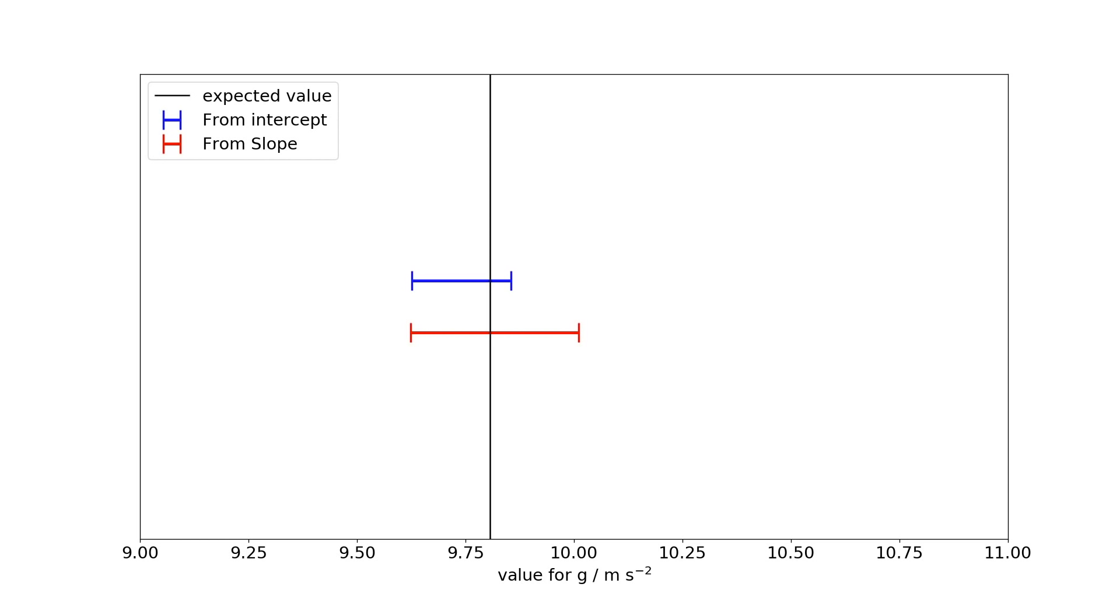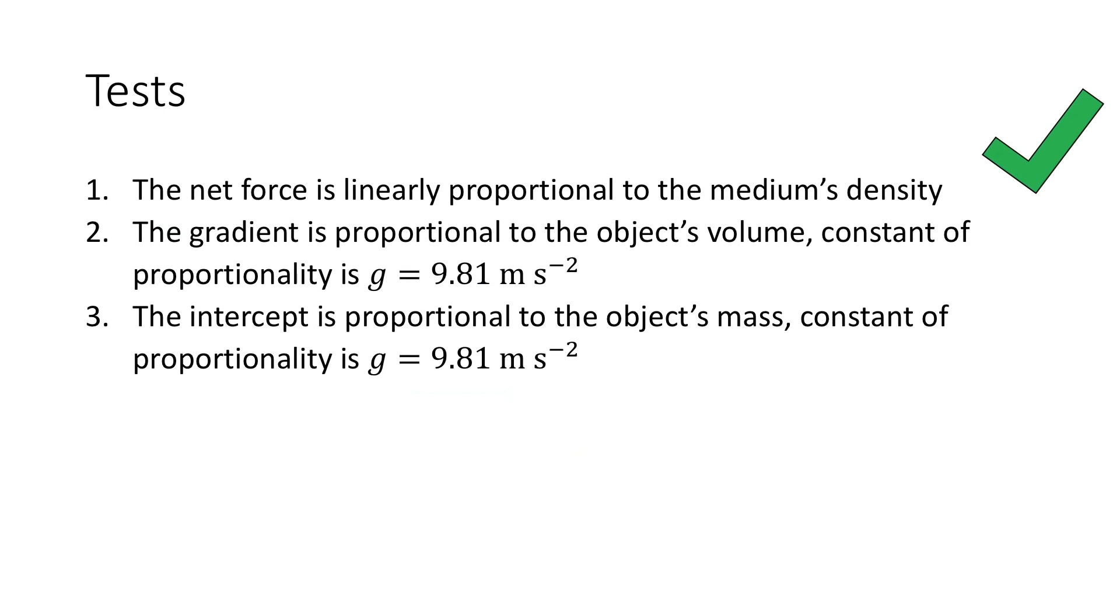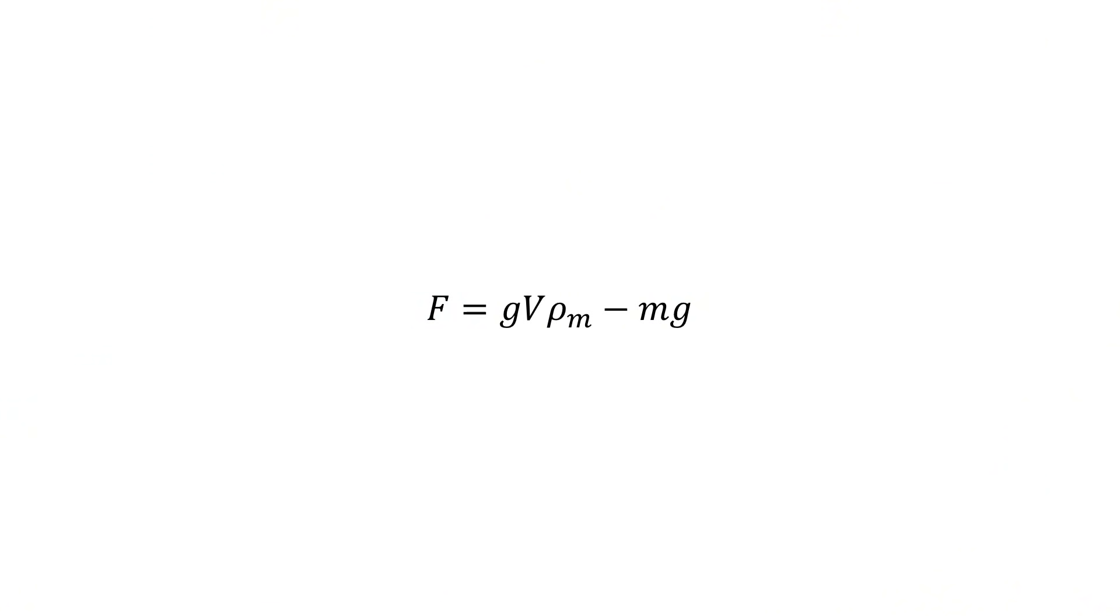So with these experiments we have shown that the net force is given by a straight line equation with the medium's density as the independent variable. We have also shown that the gradient is the product of the object's volume and the acceleration due to gravity, and the intercept is the product of the object's mass and the acceleration due to gravity. This is important because this shows that if we change the density, the intercept which represents the downward force remains unaffected. The buoyancy term is affected by the medium's density.